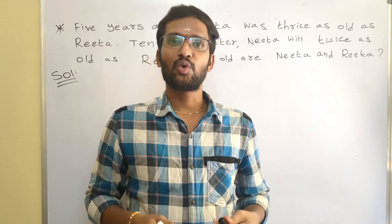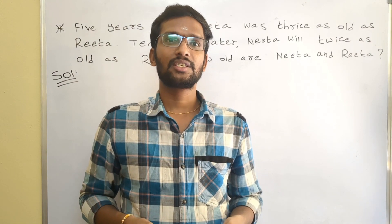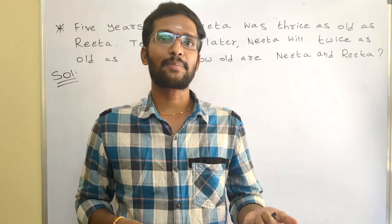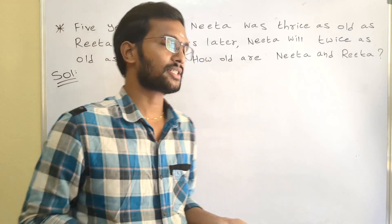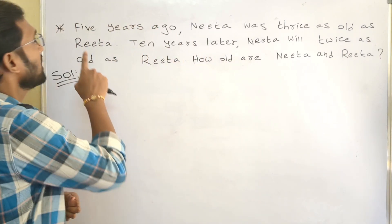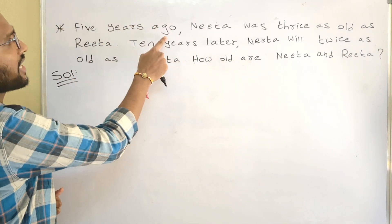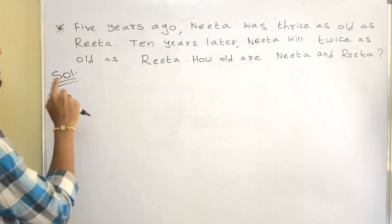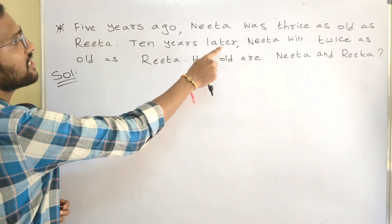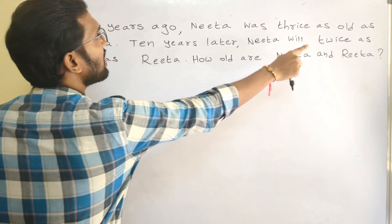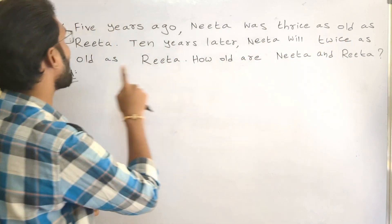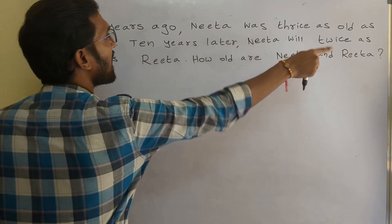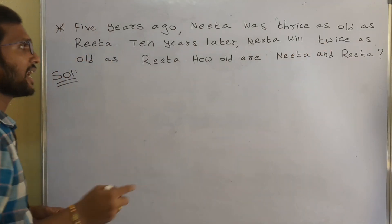Hello everyone. In this video we are going to discuss an age-related problem from the chapter Pair of Linear Equations in 2 Variables. 5 years ago, Nita was thrice as old as Rita. 10 years later, Nita will be twice as old as Rita. How old are Nita and Rita now?